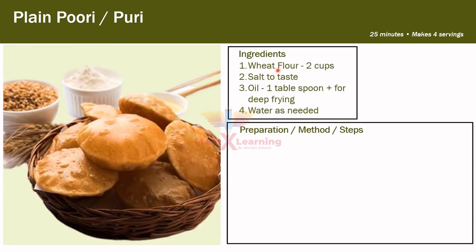We need four ingredients to prepare plain Puri. First is wheat flour (aata) — two cups. Second is salt to taste. Third is oil — one tablespoon plus extra for deep frying. Fourth is water as needed.